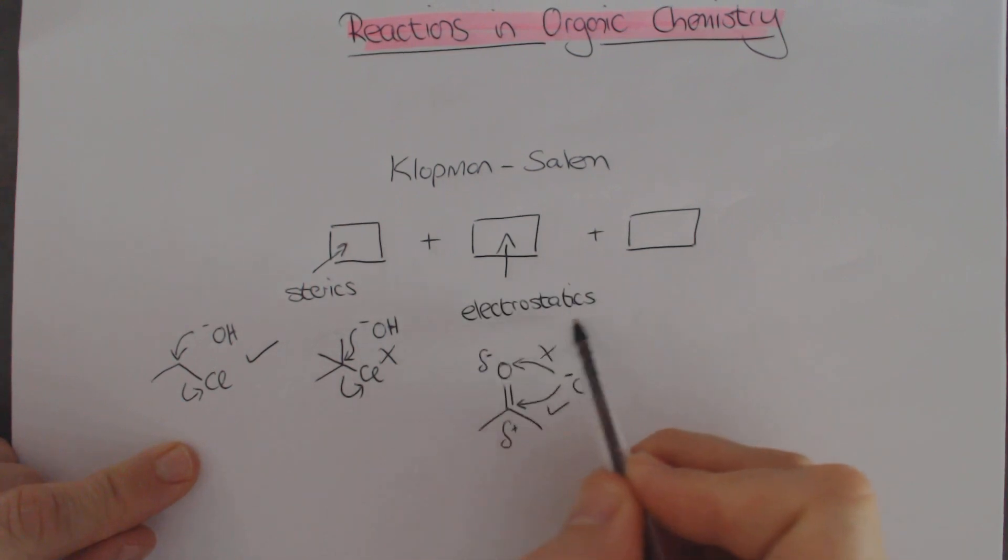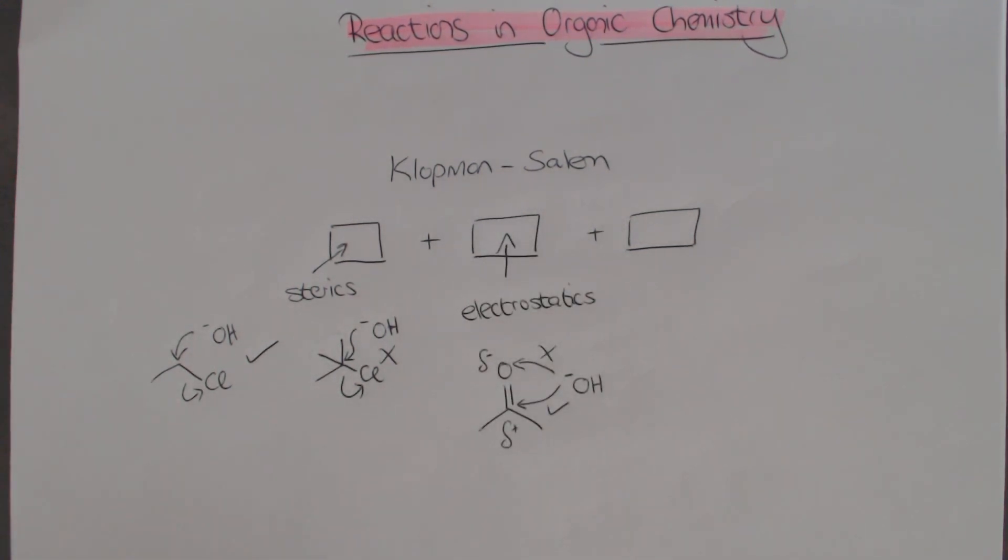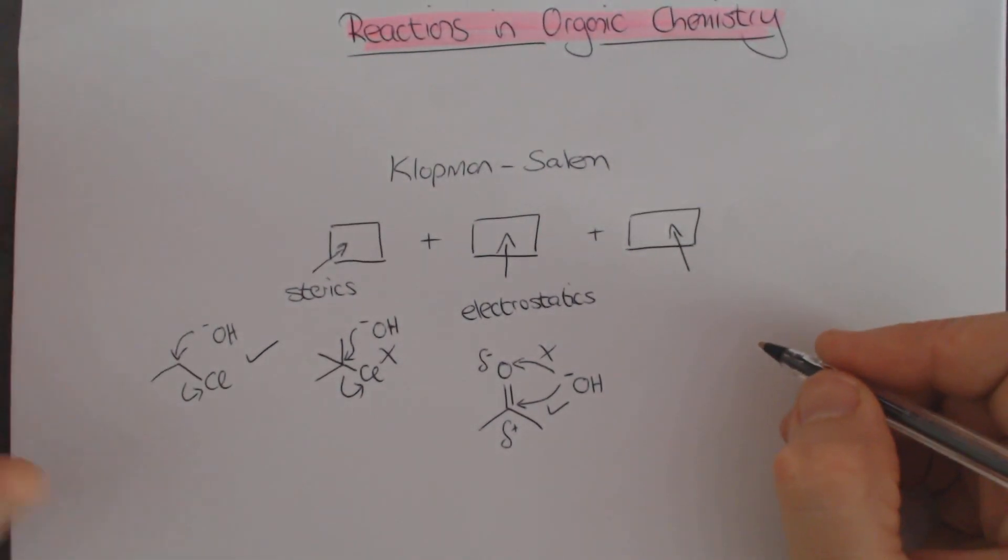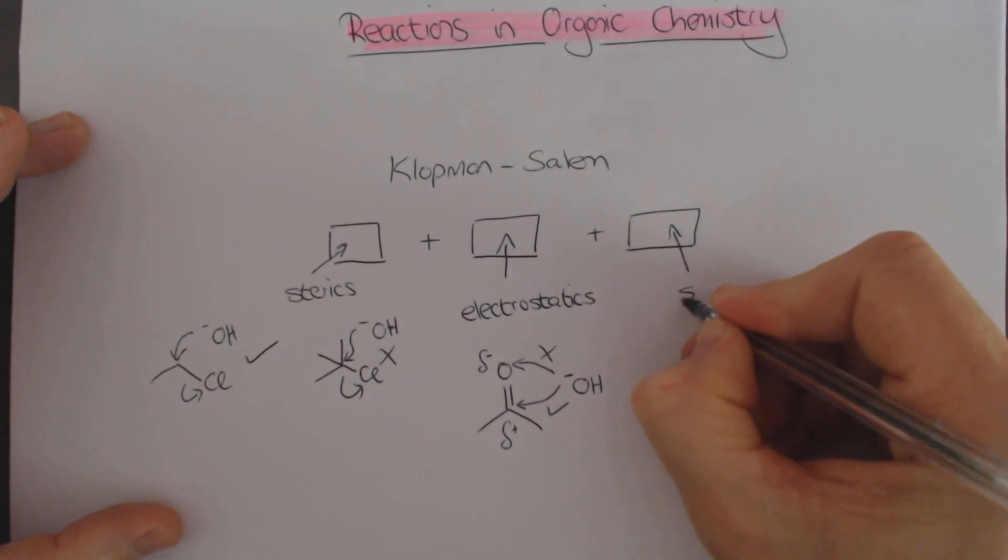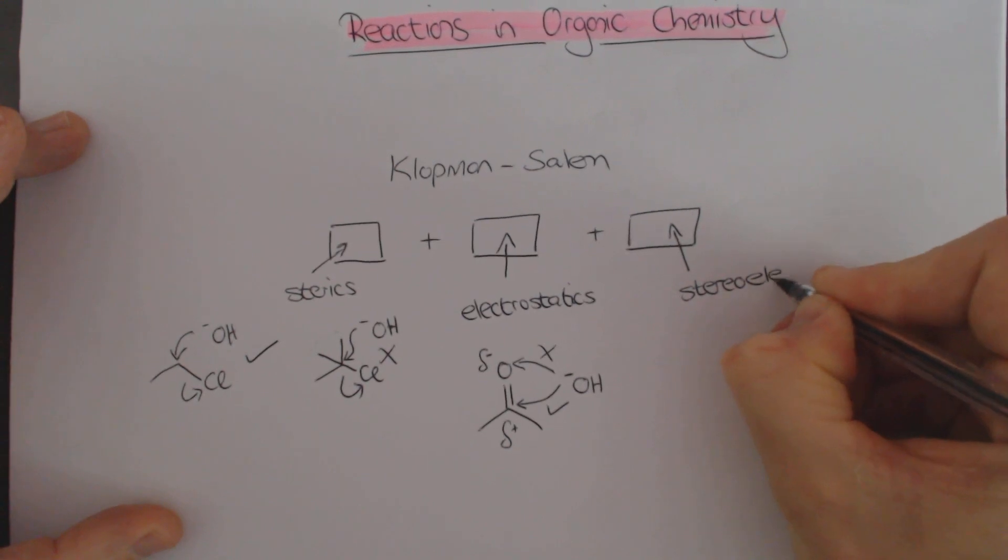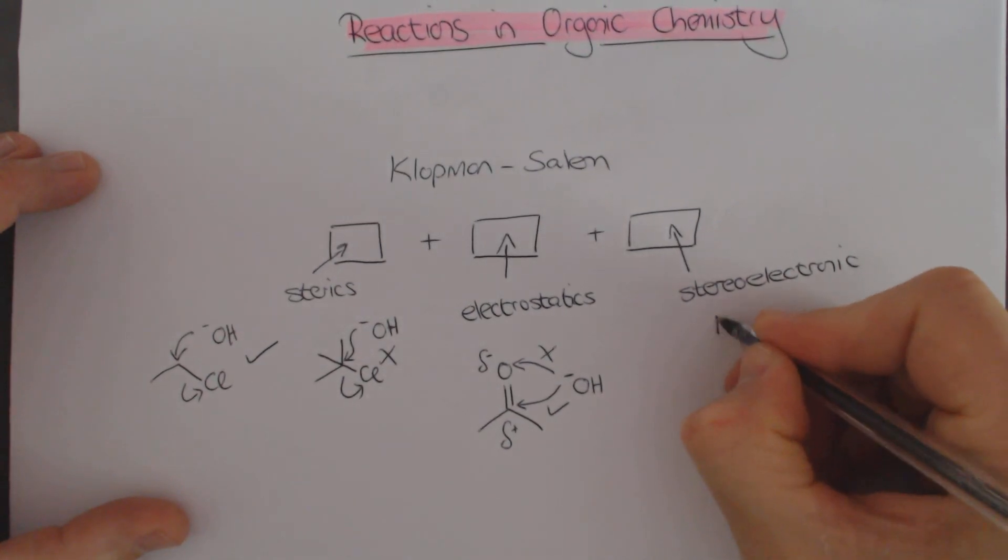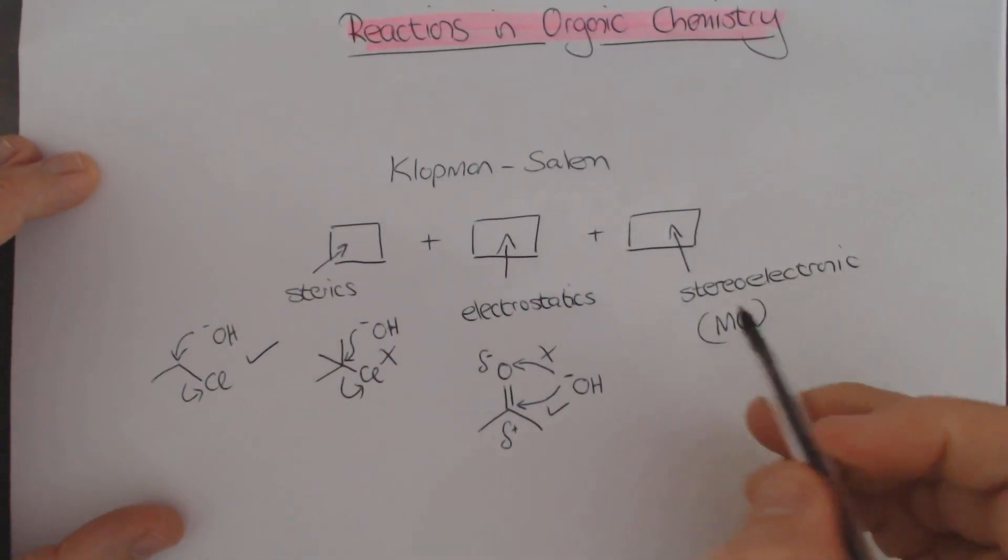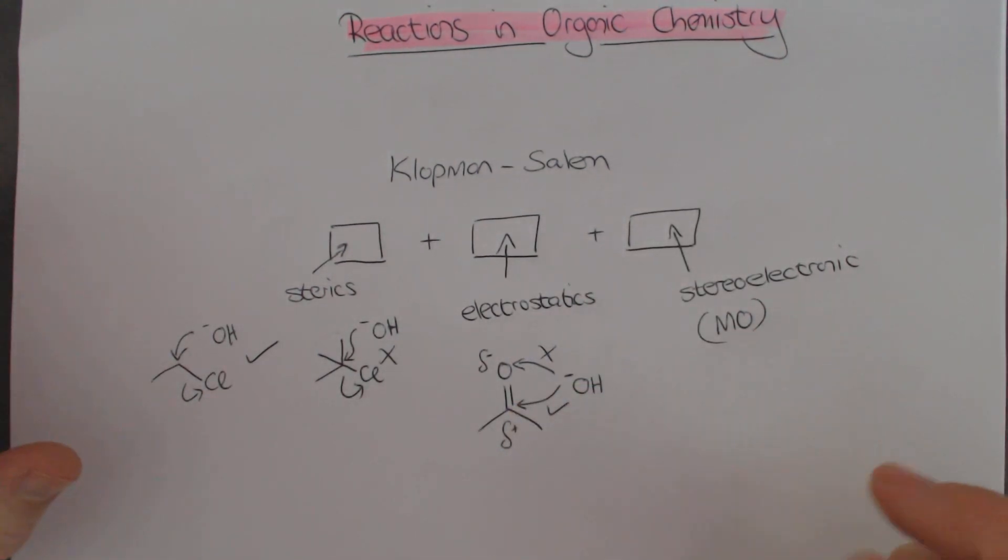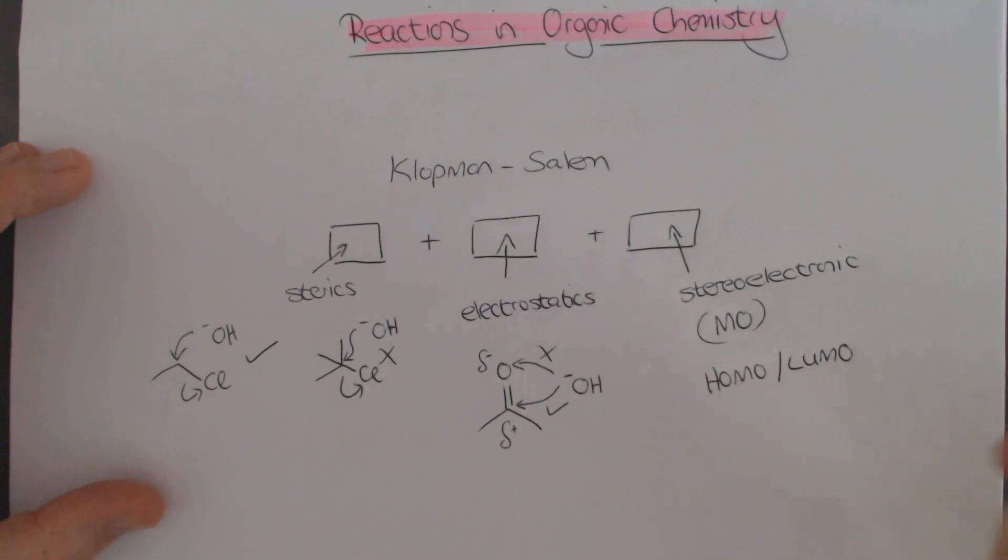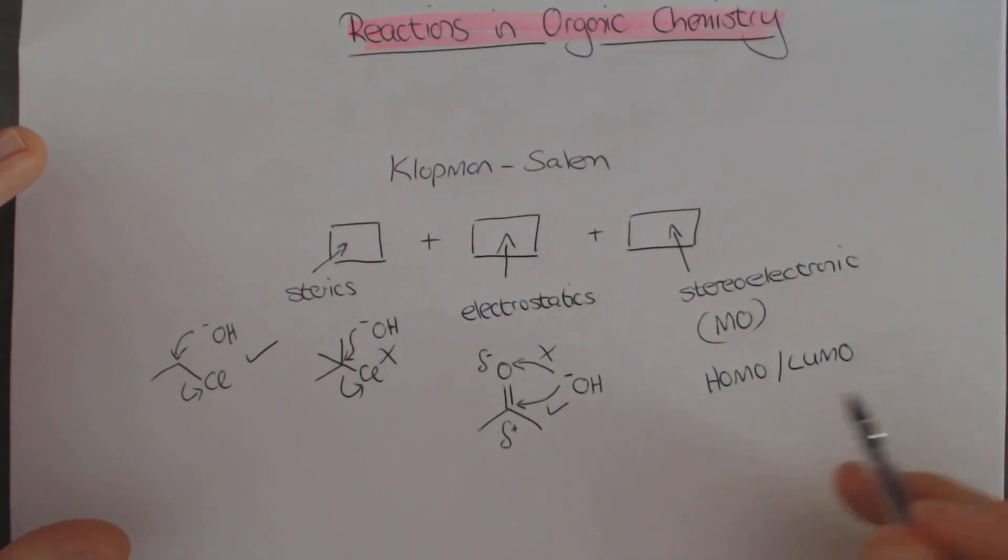The last part of the equation is something we've been dealing with in this course. This is what is often referred to as the stereoelectronic component. That's a fancy word to be talking about our molecular orbitals. This component of a reaction is saying do we have good HOMO-LUMO interactions. Do the electrophile and the nucleophile have perfectly aligned orbitals to react.